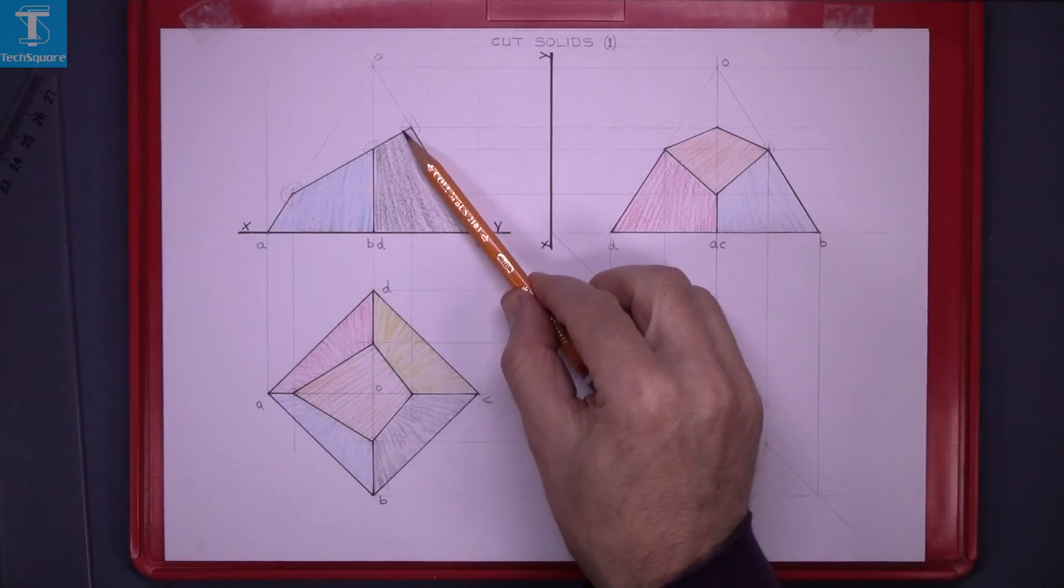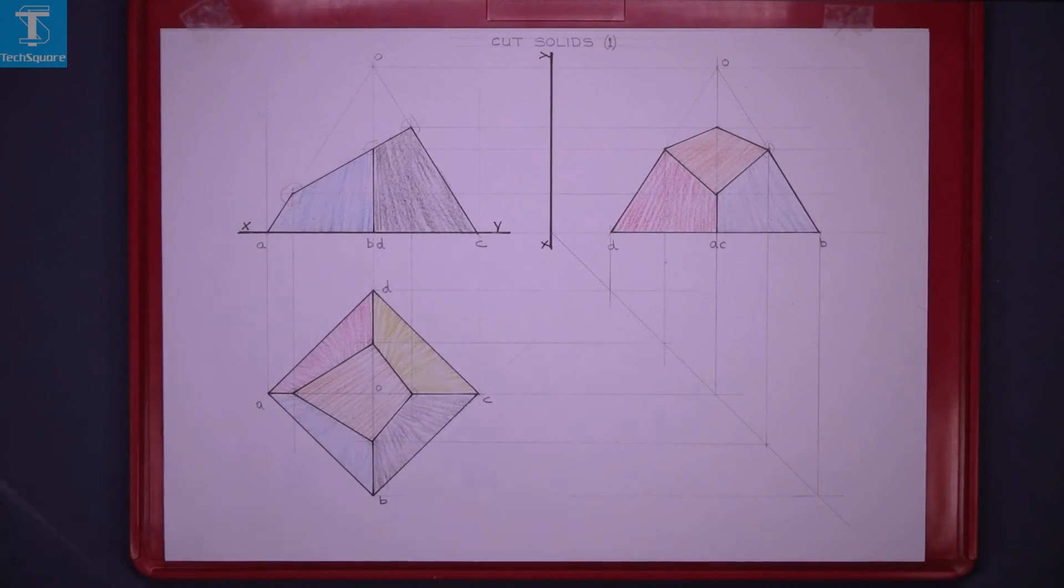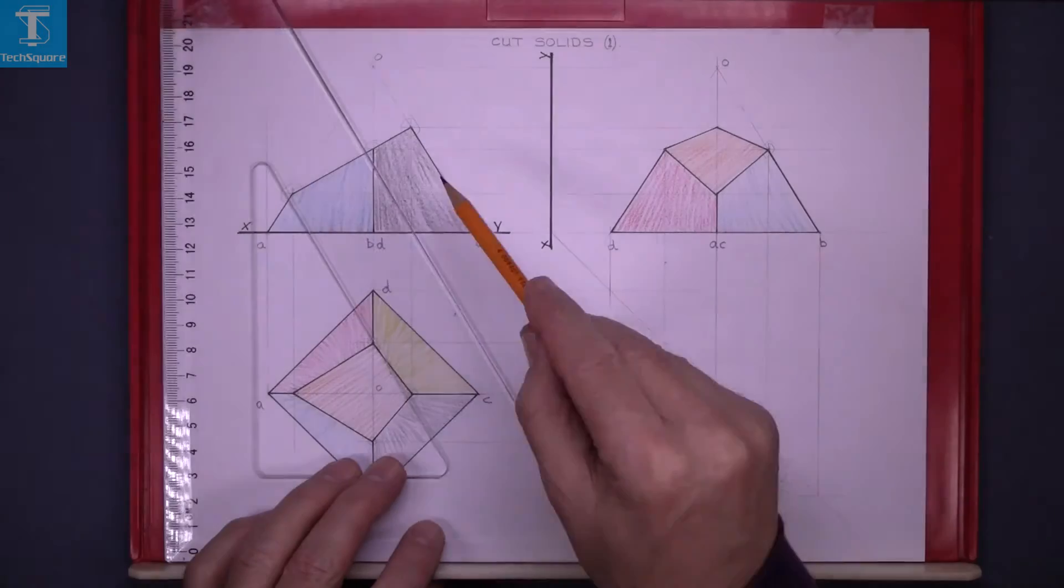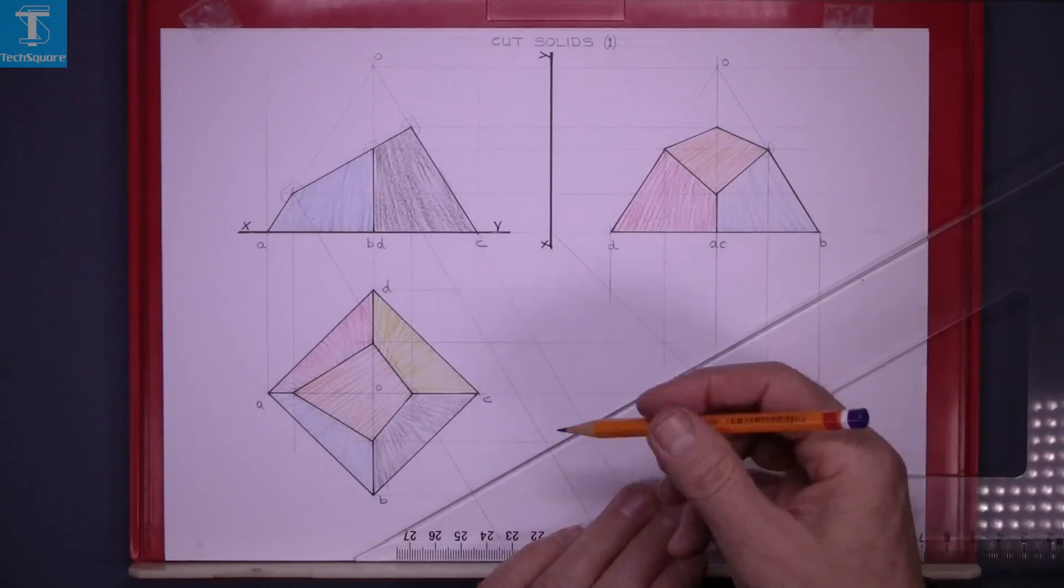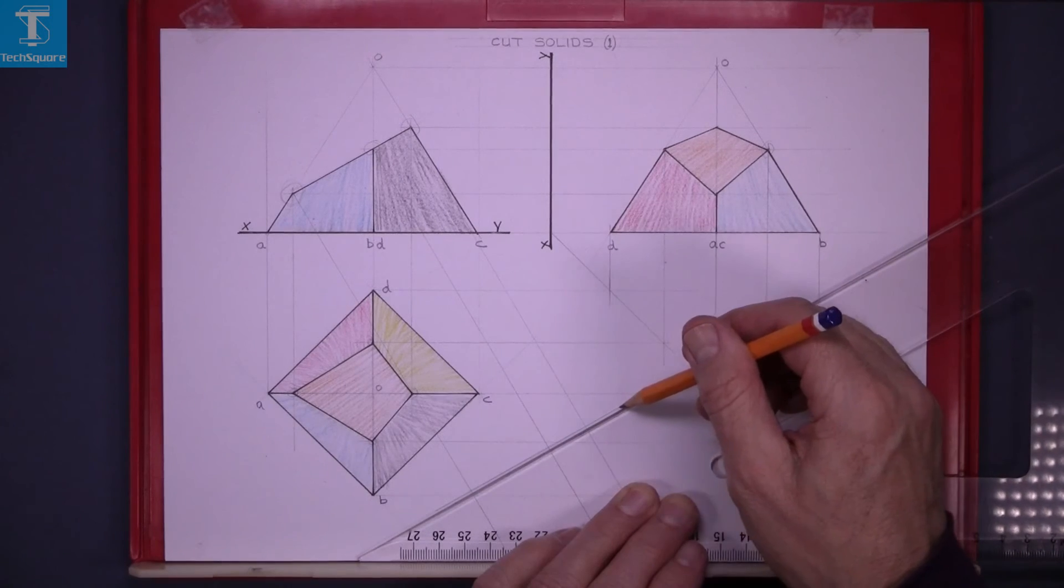If you're asked to get the true shape of this section surface what you do is project at 90 degrees to the cut surface, draw center line anywhere parallel with the cut.